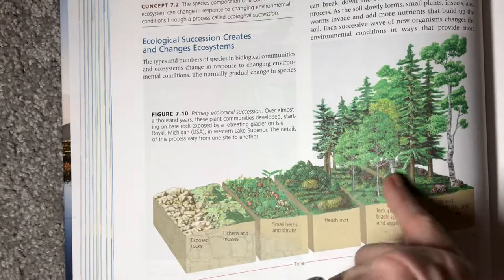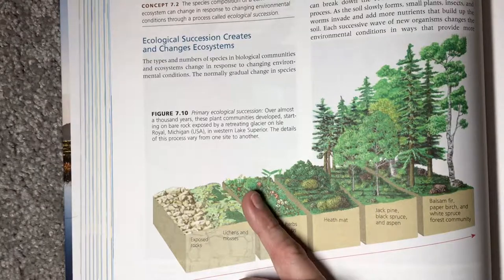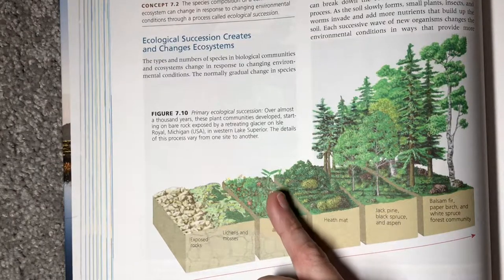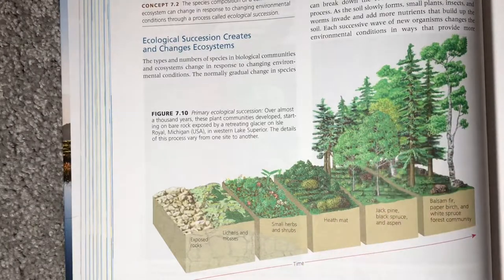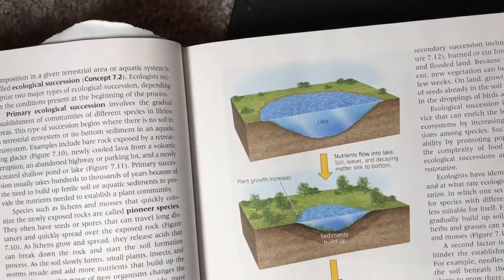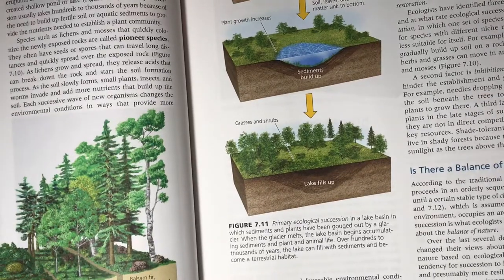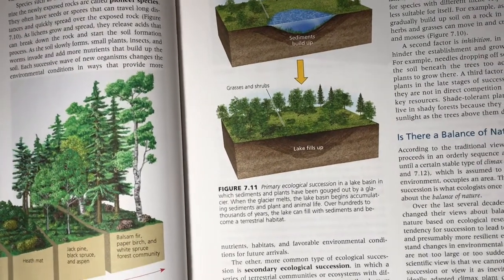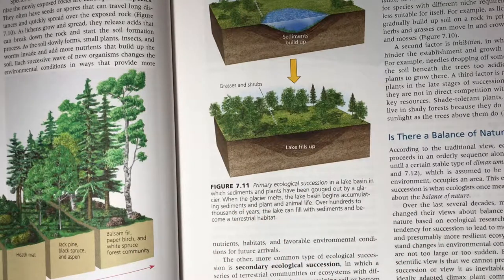The sequence of primary succession on land is: exposed rock, lichens and moss, grasses and herbs, shrubs, smaller trees, and finally larger longer-lived trees as the climax community. Primary succession in a lake occurs when sediment builds up to the point that the lake fills in, eventually resulting in a terrestrial ecosystem where a lake ecosystem once existed.